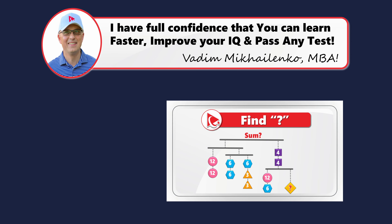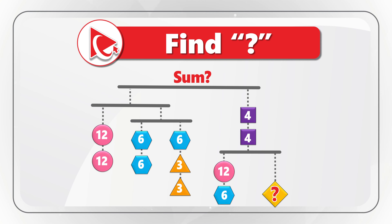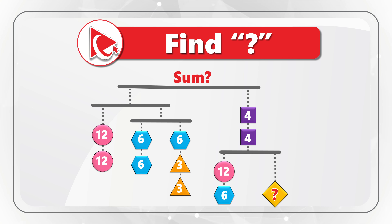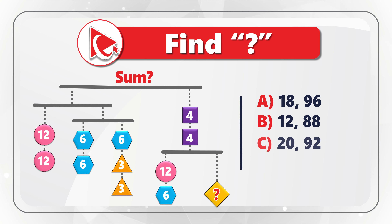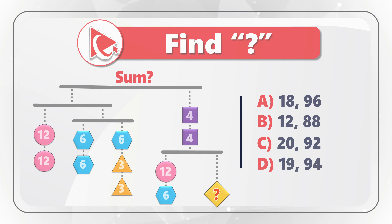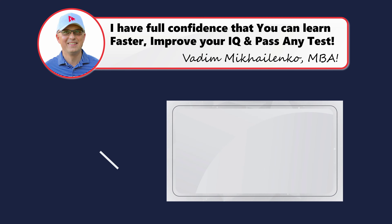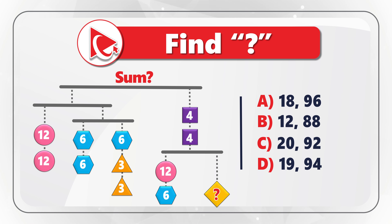Here's an amazing problem where you need to calculate not just one but two numbers. You're presented with a scale where the value of the diamond and the sum values are missing. You need to ensure the scale remains balanced by calculating both values. Select from four possible choices: Choice A — 18 and 96; Choice B — 12 and 88; Choice C — 20 and 92; Choice D — 19 and 94. Maybe pause this video to complete the calculations. I'm moving forward to share my version.